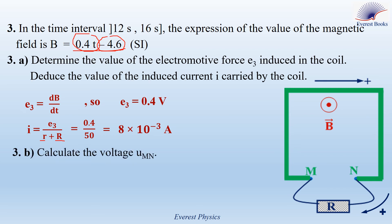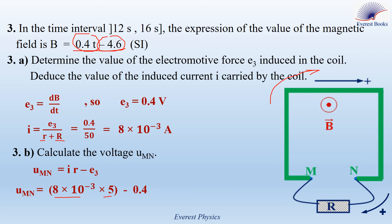Part 3B. Calculate the voltage U_MN. We calculate it across the coil: U_MN = Ir − E₃. The current is 8 × 10⁻³ A, the internal resistance is 5 Ω, and E₃ is 0.4 V. Therefore U_MN = (8 × 10⁻³)(5) − 0.4 = 0.04 − 0.4 = −0.36 V, or −360 millivolts.